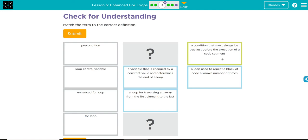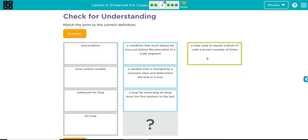A condition that must always be true just before the execution of a code segment. That sounds like a precondition. A loop used to repeat a block of code an unknown number of times. That sounds just like our for loop.